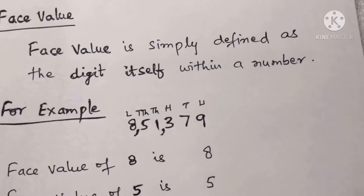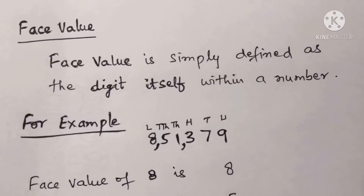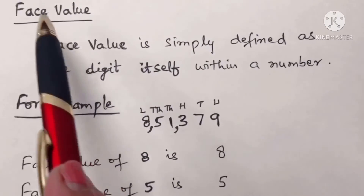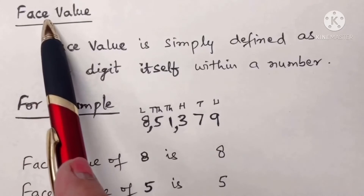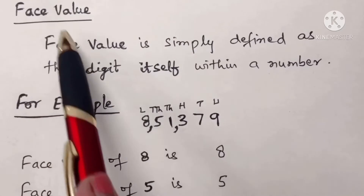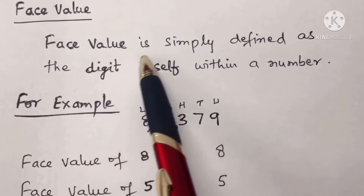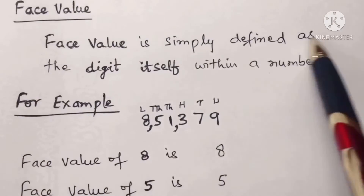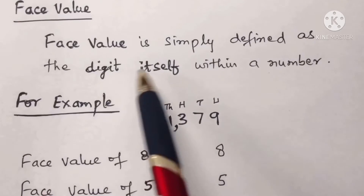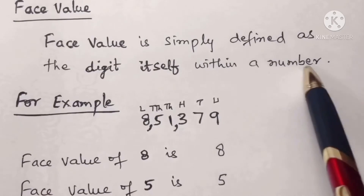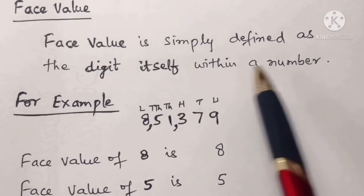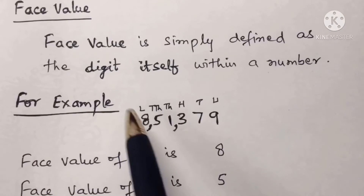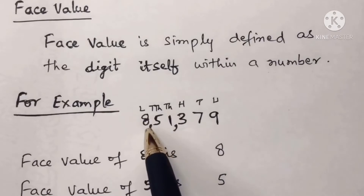Now let's learn about face value. Face value is simply defined as the digit itself within a number — whatever the place is, it doesn't matter.